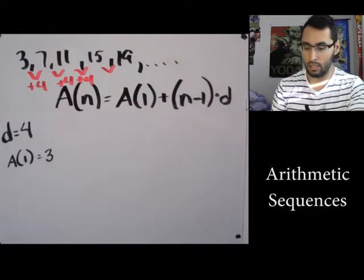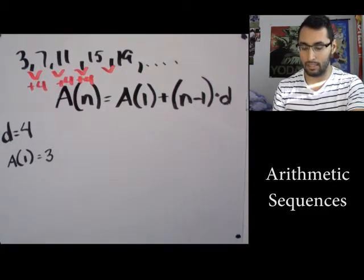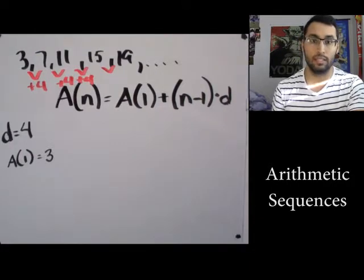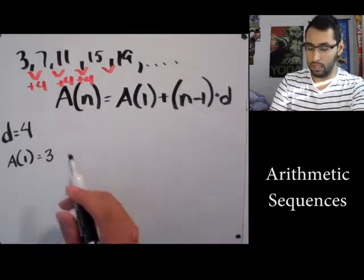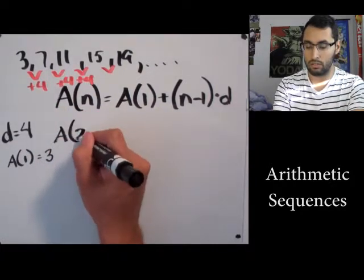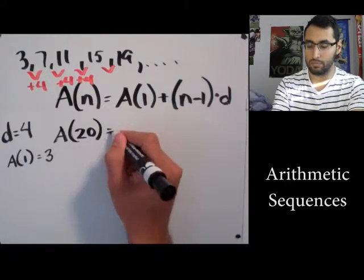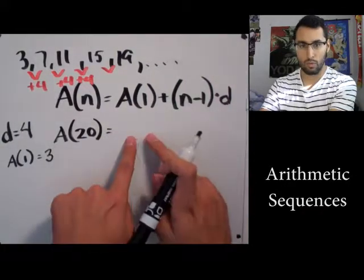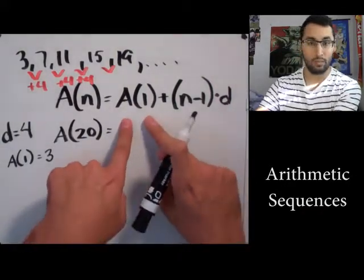Now you can see at the very beginning we have this A(n). A(n) represents what you want to find, it's where you're going to be at. So let's say with this sequence I wanted to find the 20th term. So I'm gonna put, instead of putting A(n), I'm gonna put A(20).